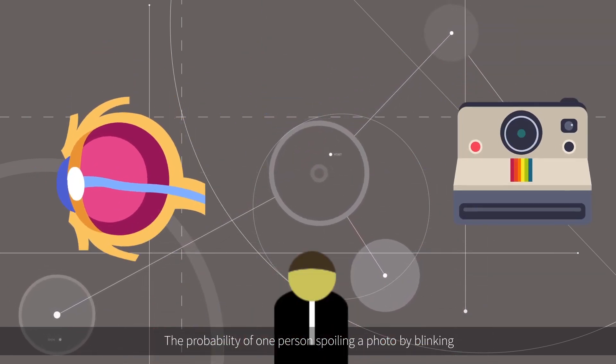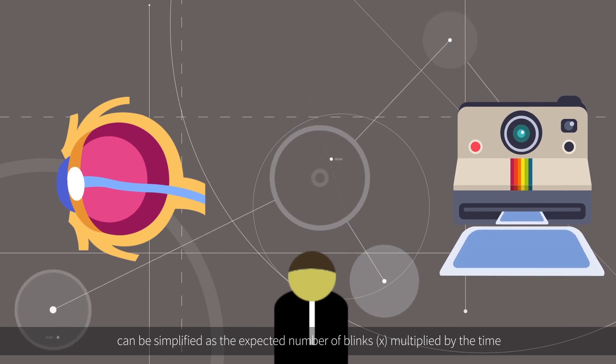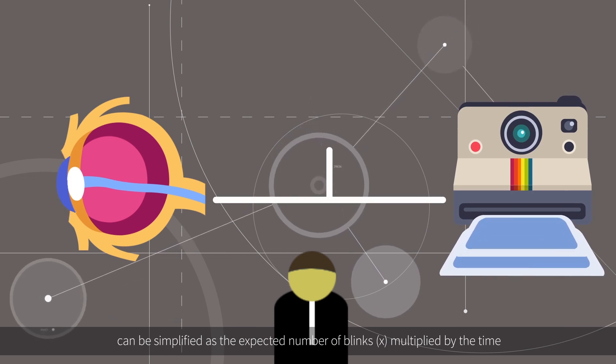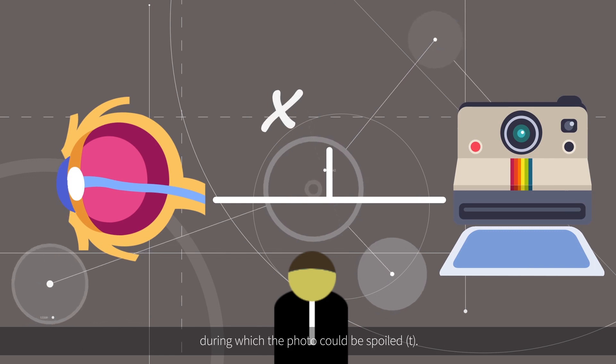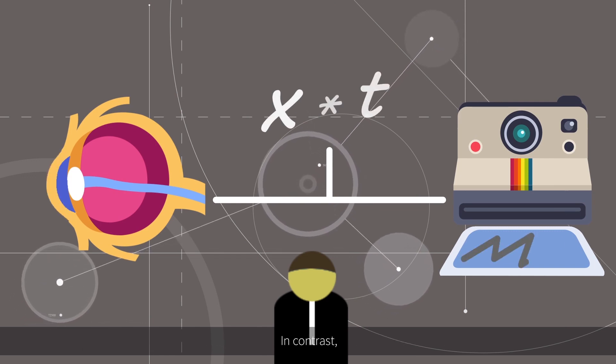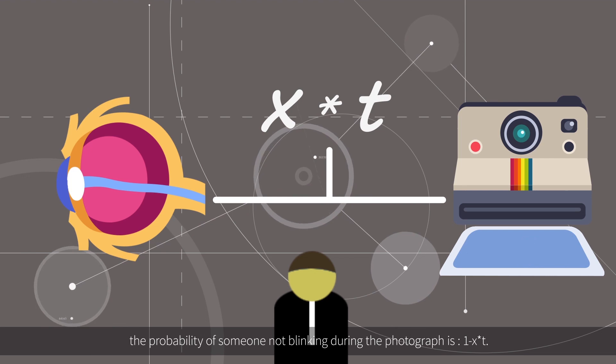The probability of one person spoiling a photo by blinking can be simplified as the expected number of blinks multiplied by the time during which the photo could be spoiled. In contrast, the probability of someone not blinking during the photograph is 1 minus x times t.